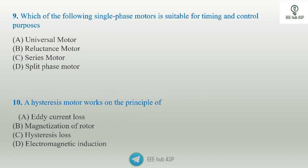Ninth question: which of the following single phase motors is suitable for timing and control purposes? This is the reluctance motor. It has a ferromagnetic rotor with non-permanent magnetic poles. It operates at constant speed, making it a reluctance motor.